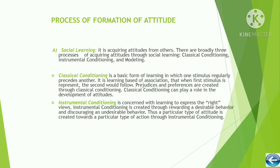The process of formation of attitude through social learning involves acquiring attitudes from others. There are broadly three processes: classical conditioning, instrumental conditioning, and modeling. Classical conditioning is a basic form of learning in which one stimulus regularly precedes another.